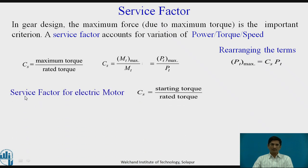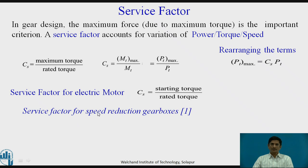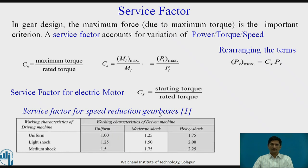Let us consider the electric motor. Service factor for electric motor: Cs equals starting torque upon rated torque. For service factor for speed reduction gearboxes, working characteristics of the driving machines or prime mover is taken on one end, and working characteristics of driven machines or the application is taken on the other end. If the characteristics match as uniform-uniform, then Cs is 1. Accordingly, we can select the Cs for a typical application.